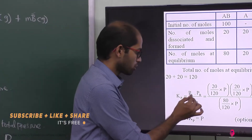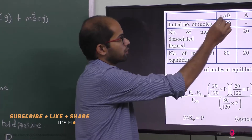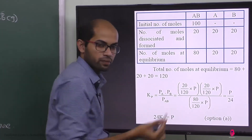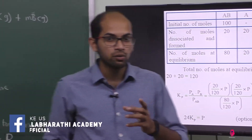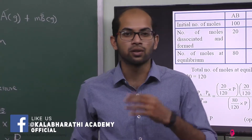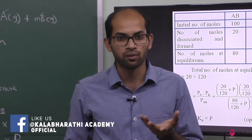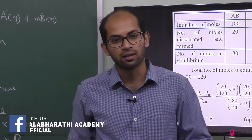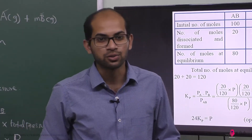All the stoichiometric coefficients are 1, so each term is raised to the power 1. This is the answer to question 14. Kp equals P divided by 24. Thanks for watching, friends.